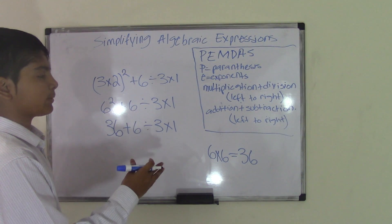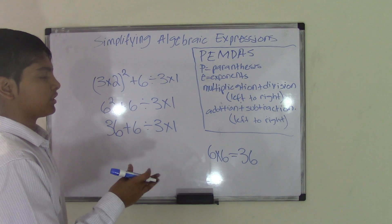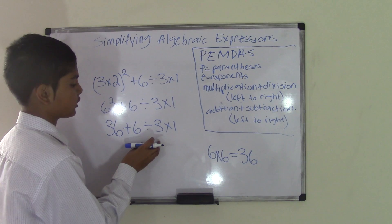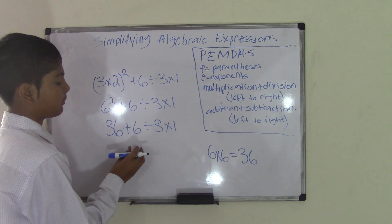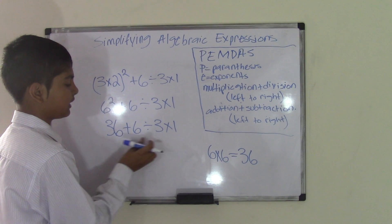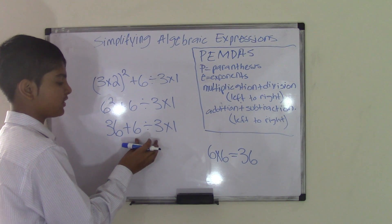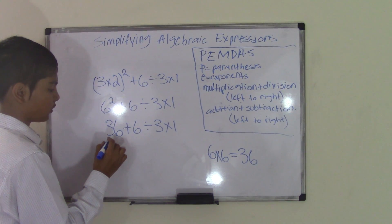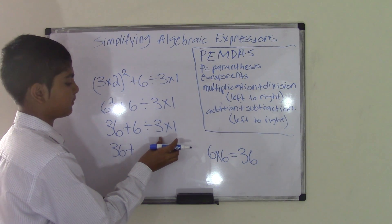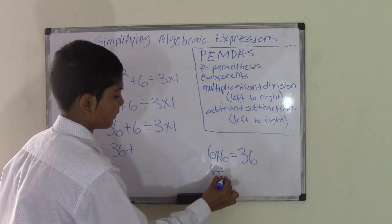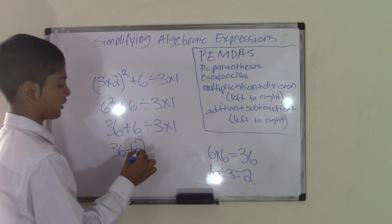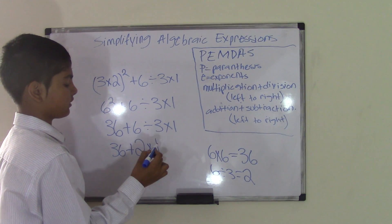Now the next thing is multiplication or division, whichever comes first, left to right. So which comes first? Division comes first, so we're going to do that. We have to remember to go left to right, not right to left. So we start from left to right, find the division first, and do that first. Bring down 36, plus, and now we do 6 divided by 3. We know that 6 divided by 3 is 2. So we come back, write our quotient, and then copy every single thing down.